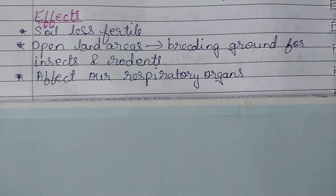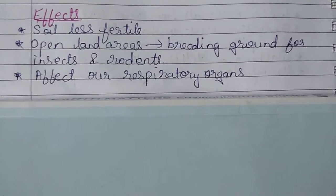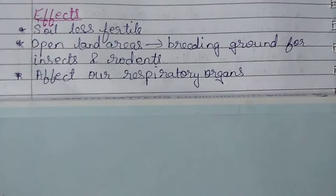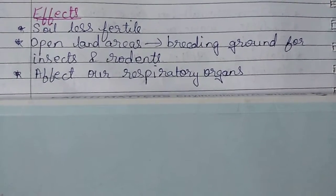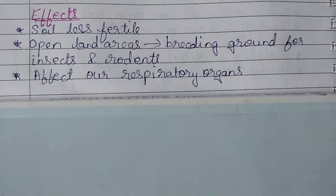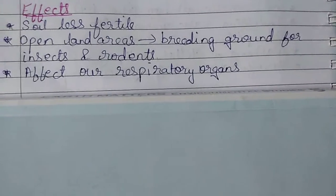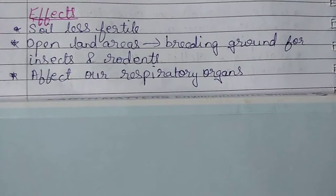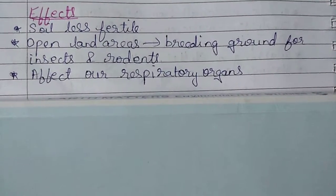Open land areas serve as breeding grounds for insects and rodents. If land is kept open, you will find many insects and rodents living there — surviving, reproducing, and making it their habitat.